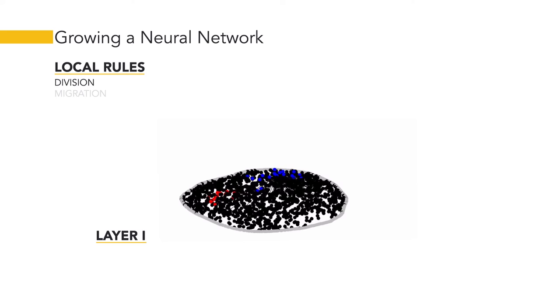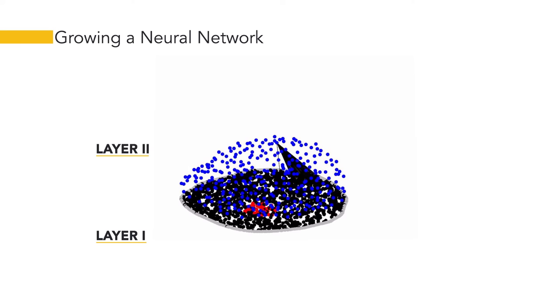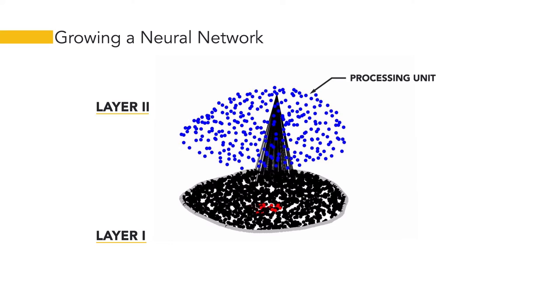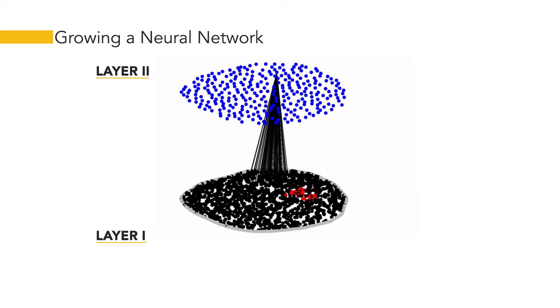Emergent spontaneous traveling waves style layer 1, and once some nodes reach their critical local density, they divide to form processing units that migrate to higher layers. The emergent activity wave in layer 1 influences the connectivity between the layers, ultimately resulting in retinotopic pooling networks.